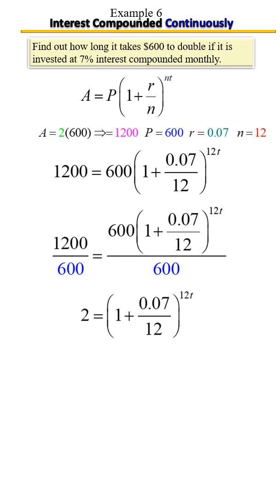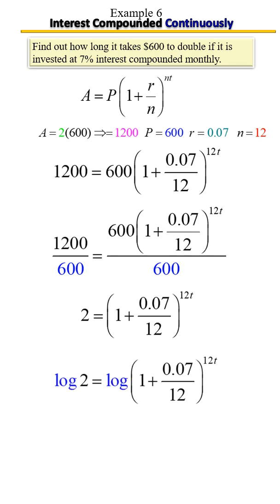Next, we're going to take the common log of each side. Then, since we have exponents, we apply the power rule and bring those exponents out — they become the coefficients of that log.